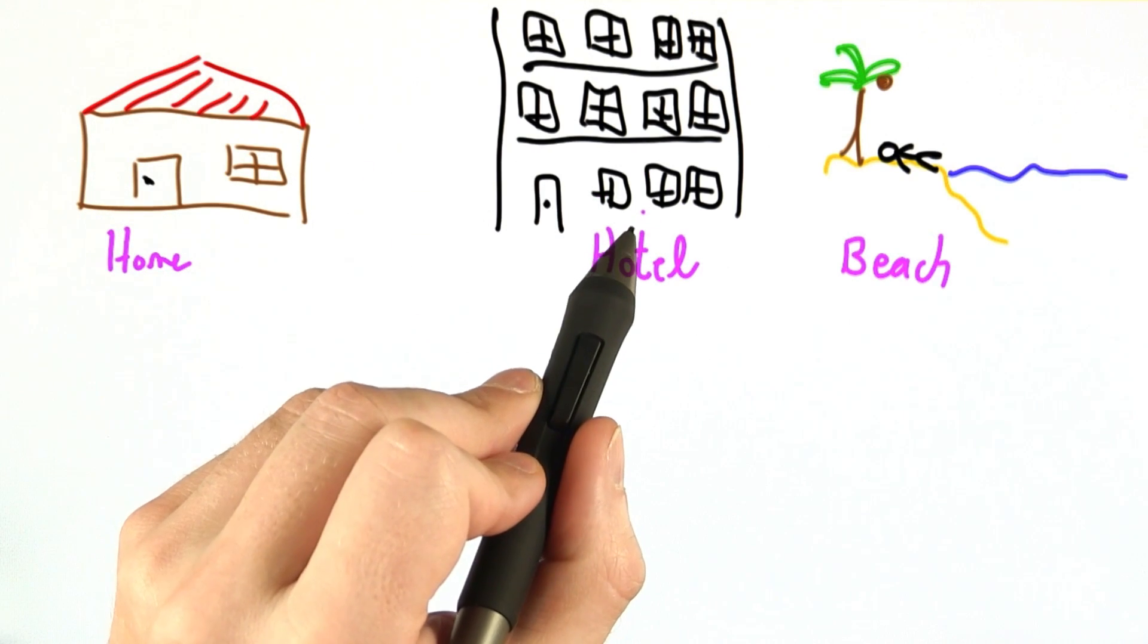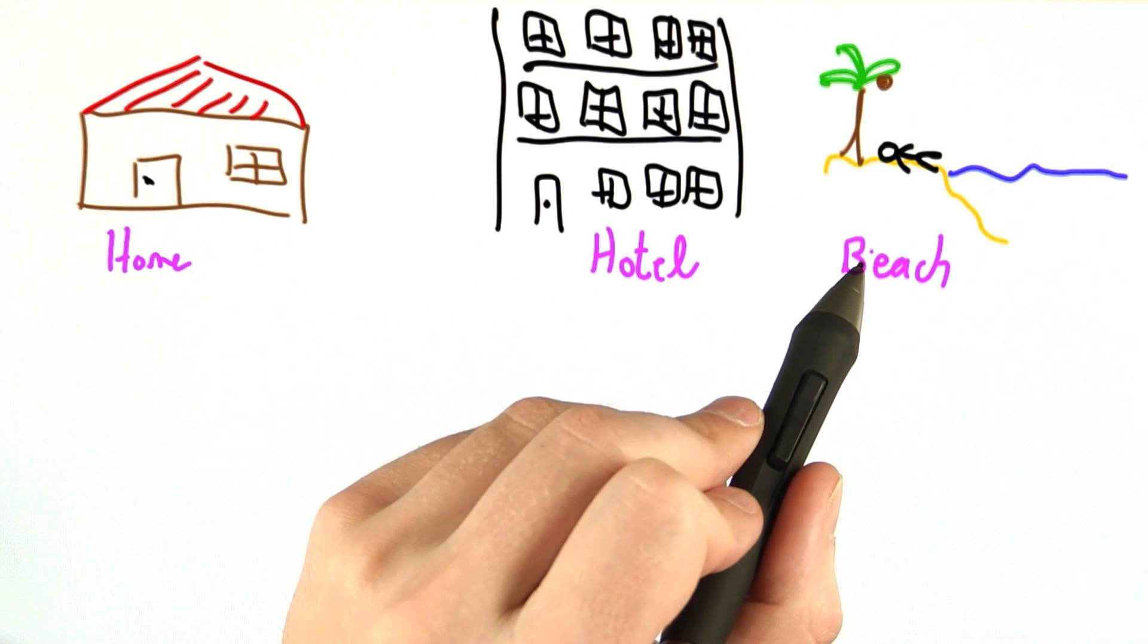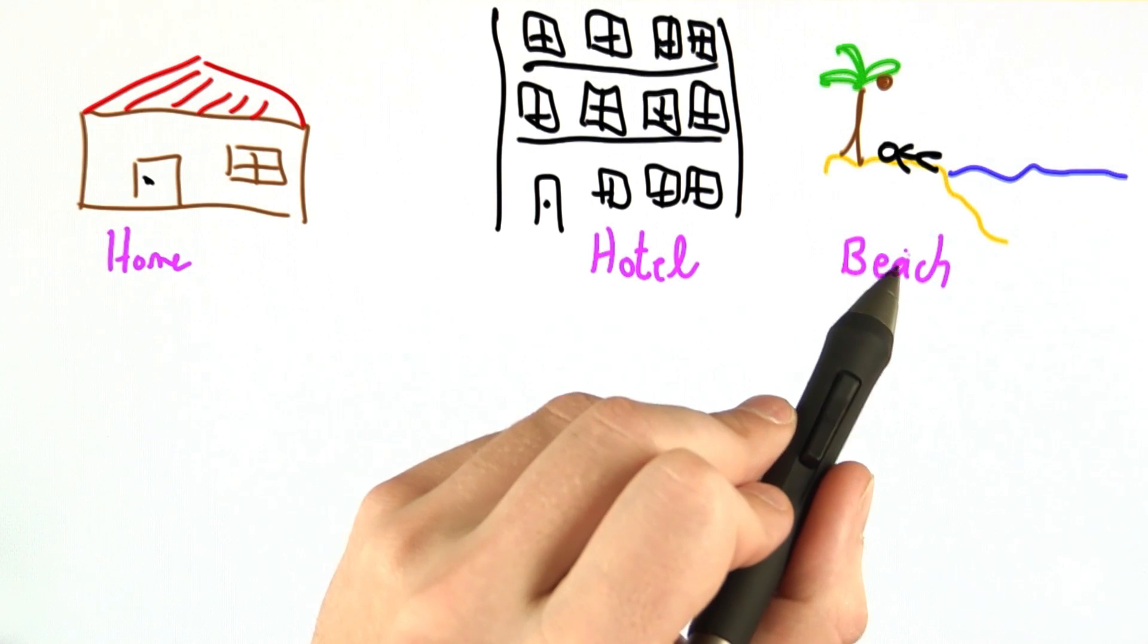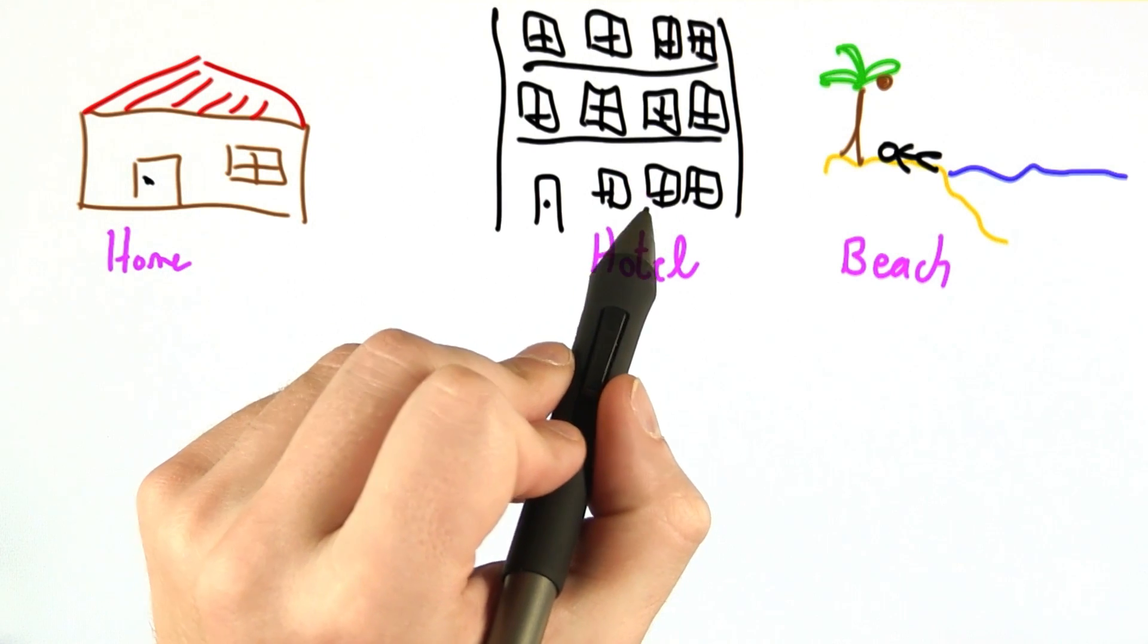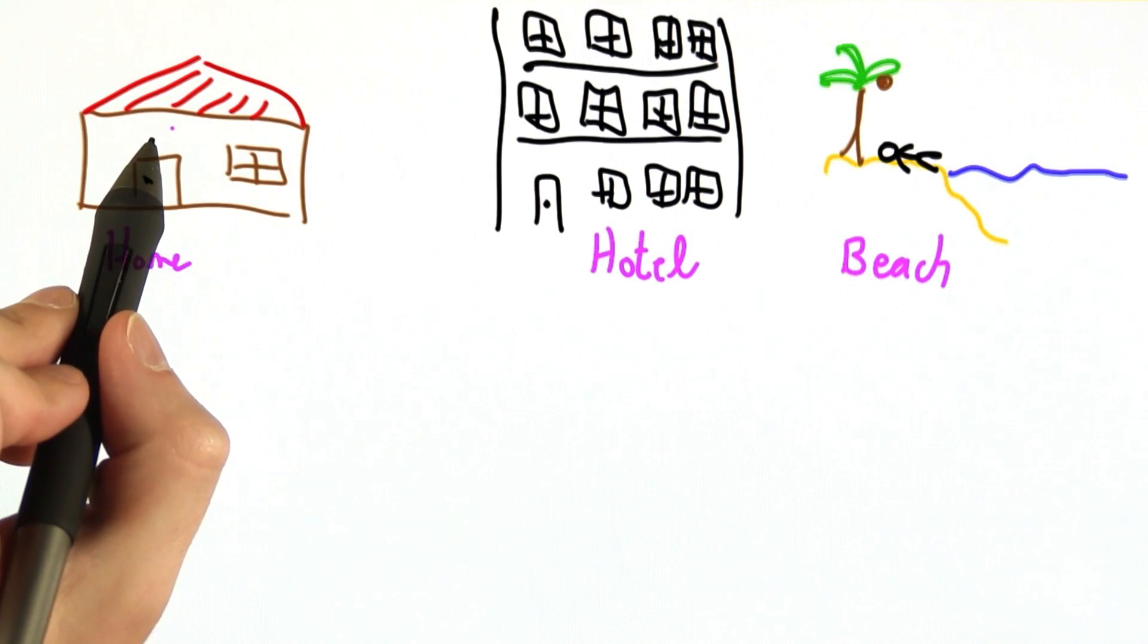And then eventually you're going to leave your hotel room and go out on the beach. Maybe you'll bring your swimming suit, pack a lunch, that sort of thing. You'll bring a few items with you, but not everything that was in your hotel room and certainly not everything that was in your home.